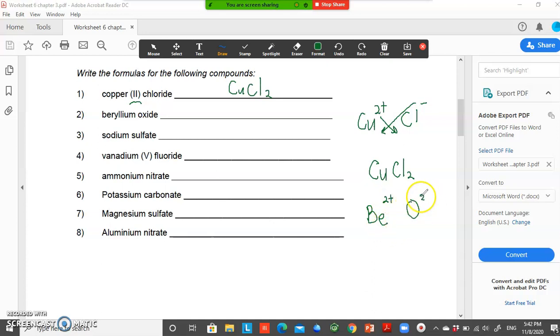You do the crossover by bringing the number to the bottom of each element. Therefore, you get Be2O2. You can see both subscripts here having the same number. Therefore, you can simplify further by cancelling off the 2. And you get the simplest formula for beryllium oxide: BeO.